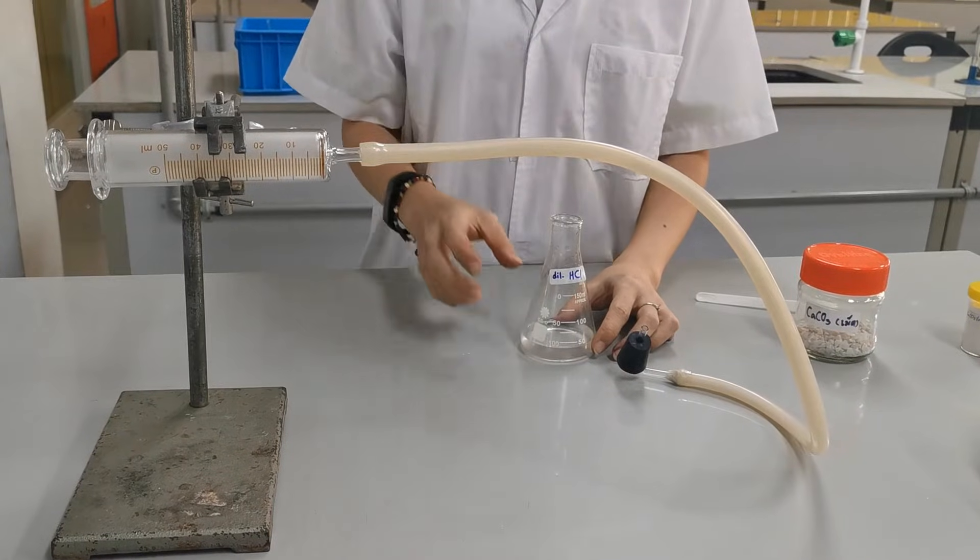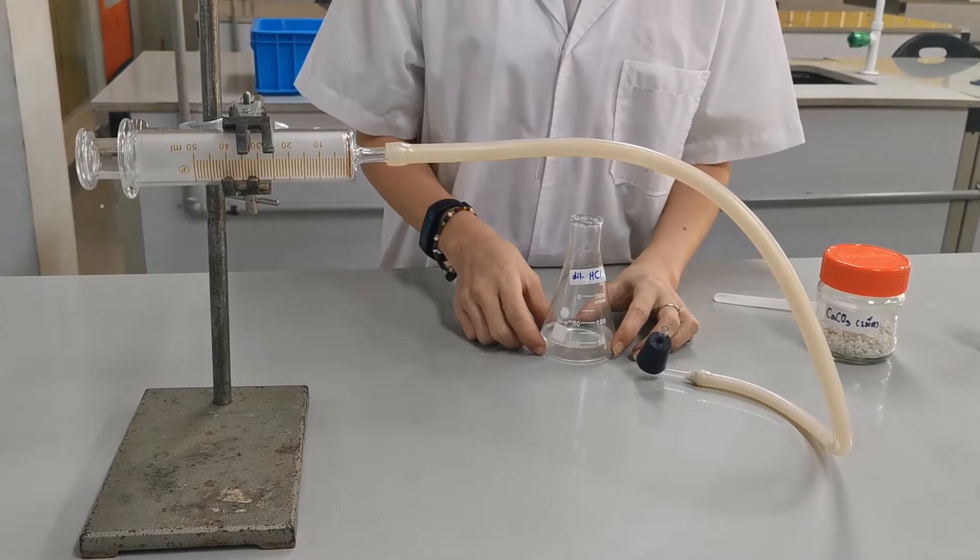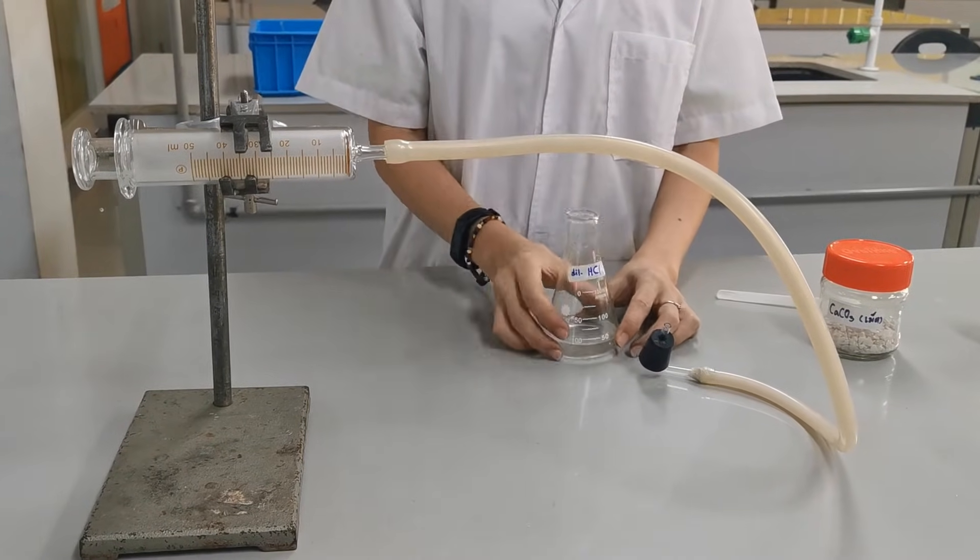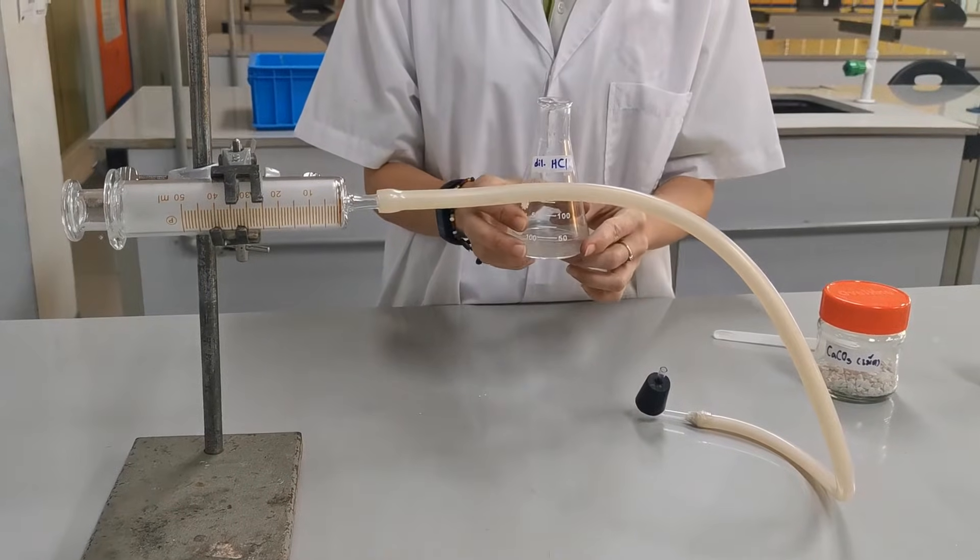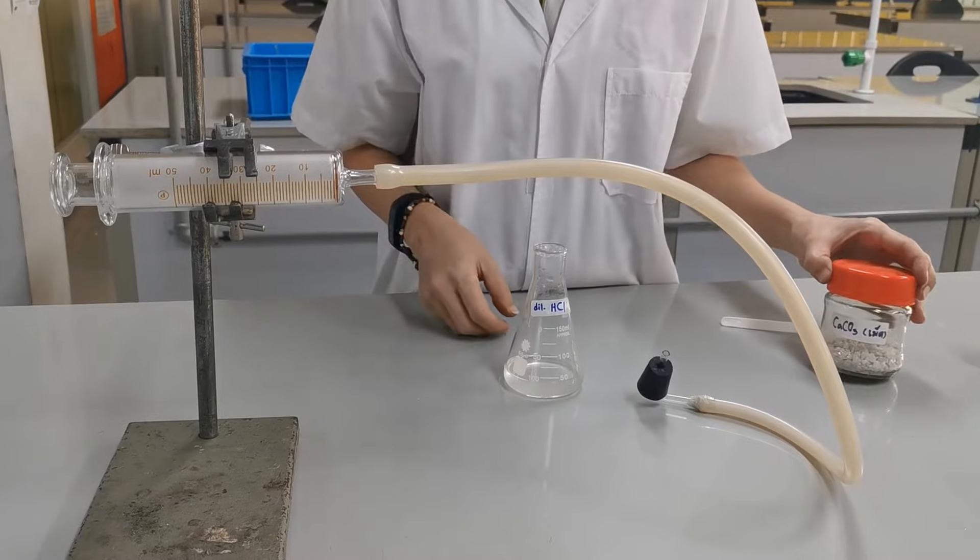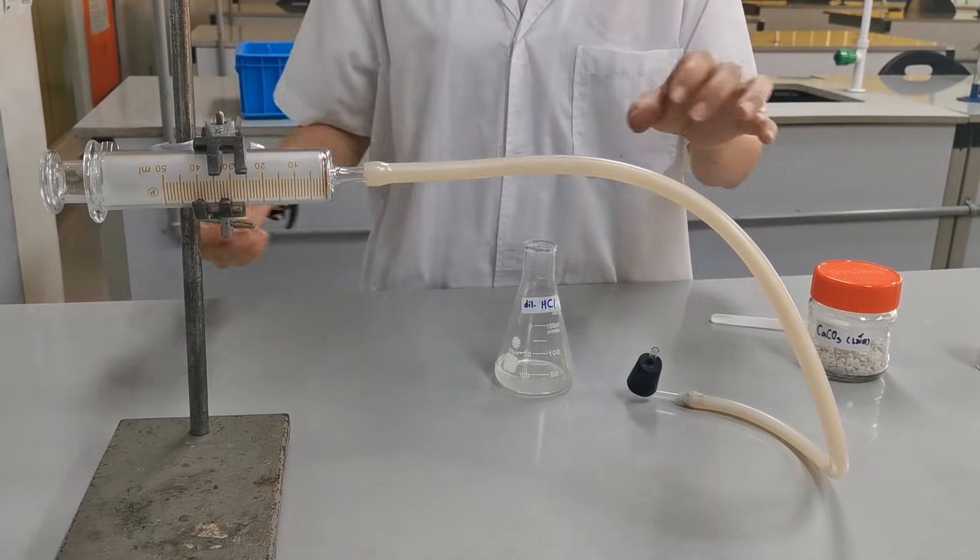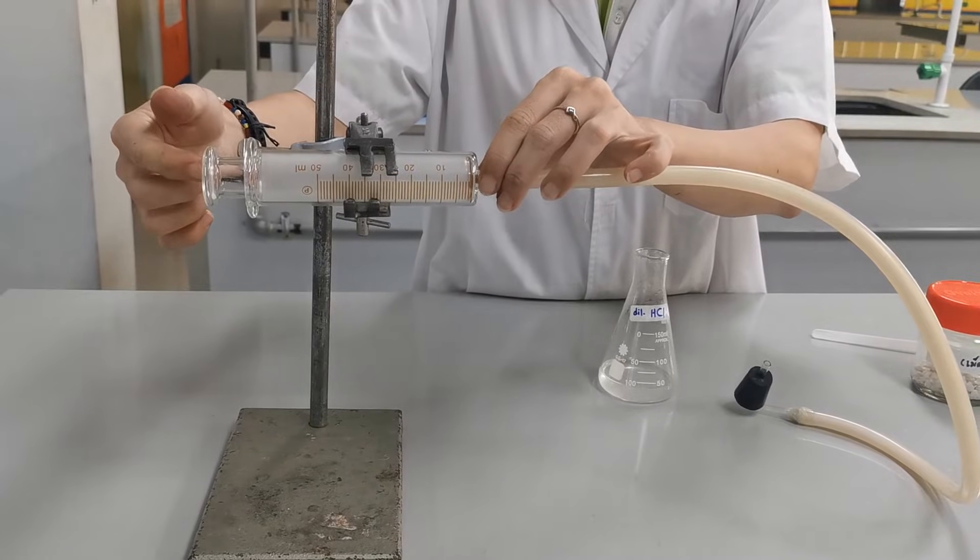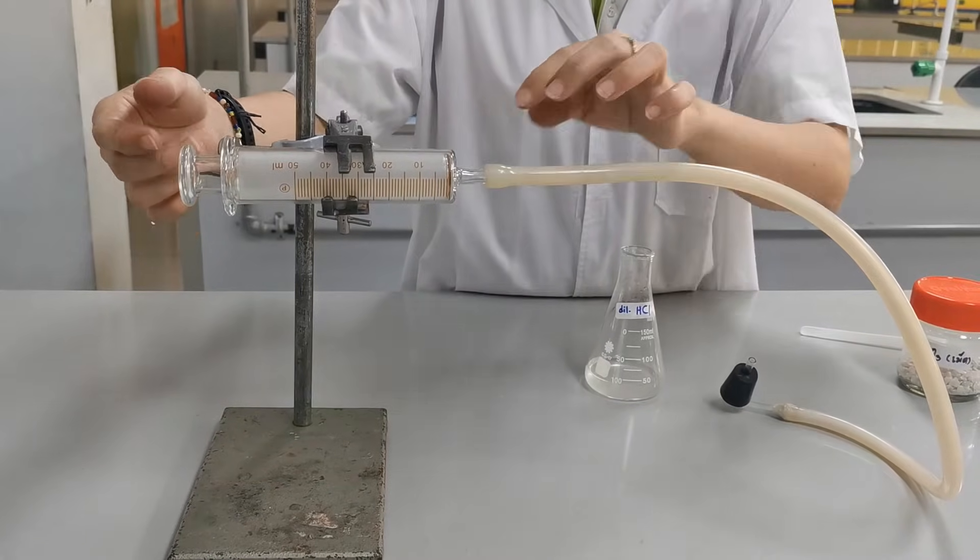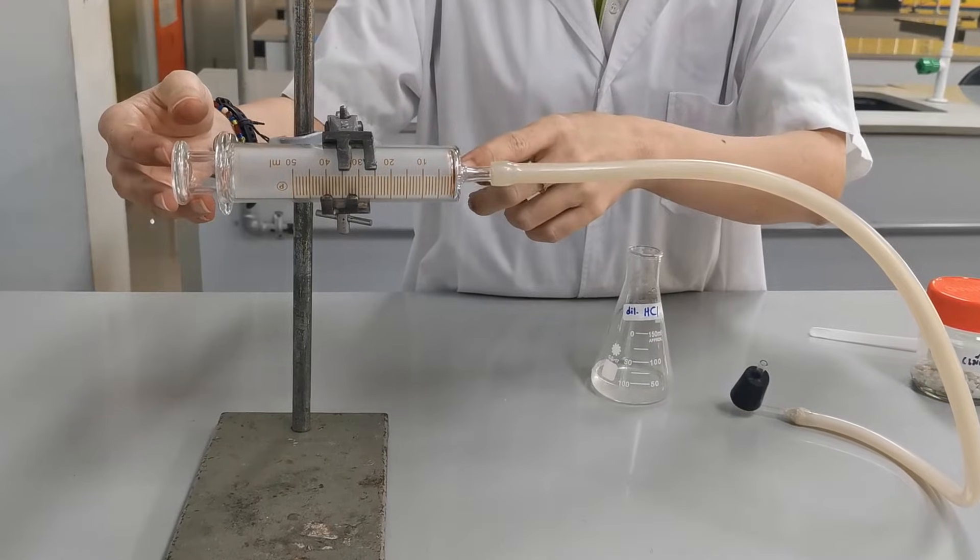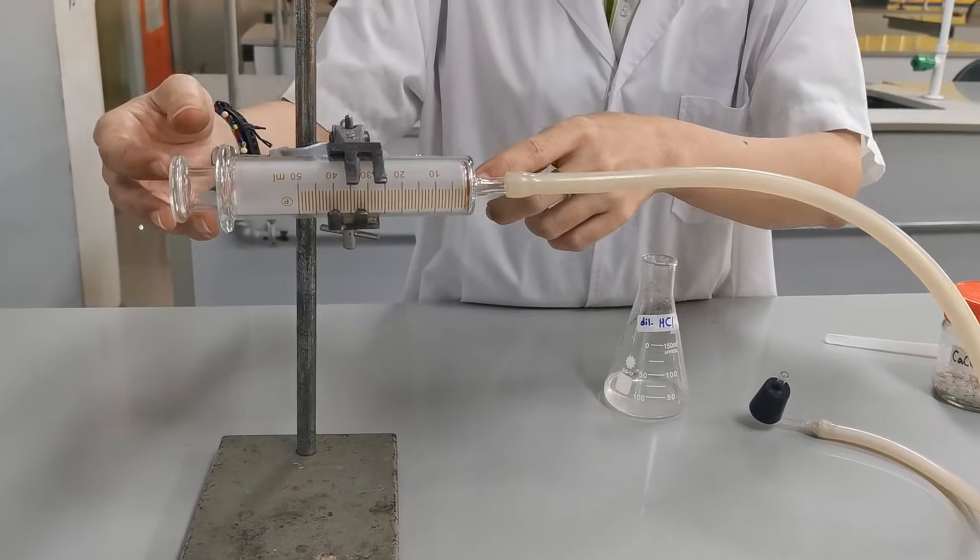To demonstrate how to use the gas syringe to collect and measure the volume of gases, this time using calcium carbonate, first check that the plunger is pushed all the way into the barrel so there are no gases collected in the gas syringe.